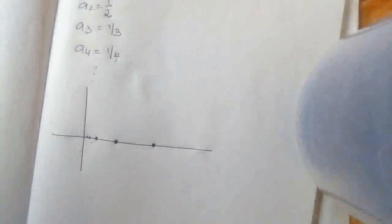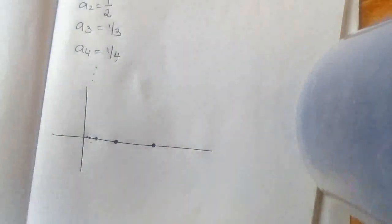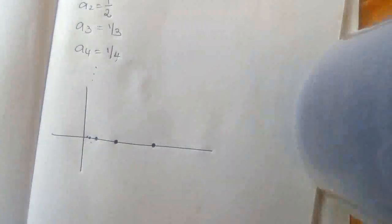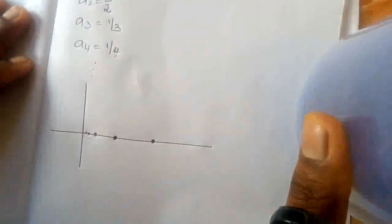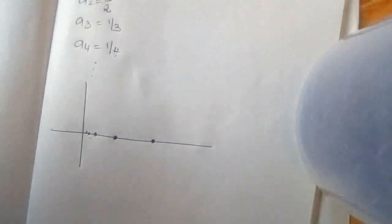As n goes to infinity, what is the behavior of a_n? That means: to which number does a_n go? If a_n does not come to one particular number, we say it has no limit. Here, for a_n = 1/n, as n goes to infinity, 1/n comes to 0, or 1/n is near to 0.